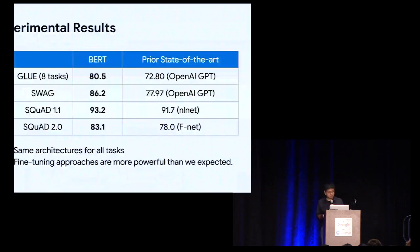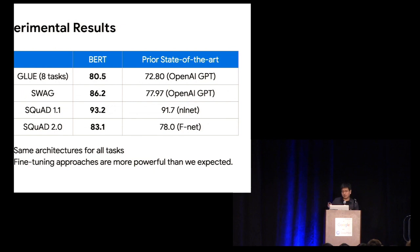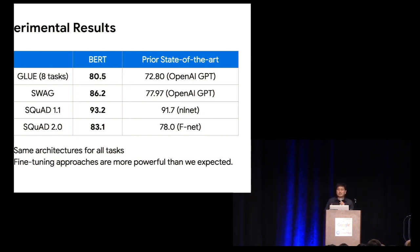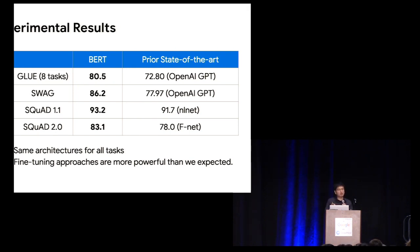Here are the results of BERT. On GLUE we look at eight tasks, and there are also SWAG 1.1 and SWAG 2.0. The first column shows BERT results and the second shows the prior state of the art — where prior state of the art used different architectures for different tasks. BERT uses almost the same architecture for all tasks, showing this architecture can be applied broadly across classification, sequence tagging, and question-answering tasks. This means the fine-tuning approach is more powerful than we expected.